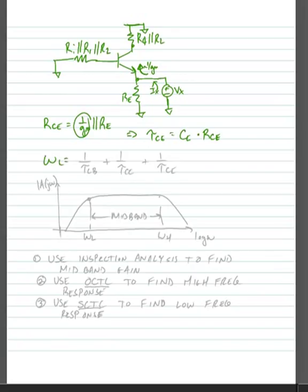And we can now find our low-frequency pole, omega L, is equal to 1 divided by tau CB plus 1 divided by tau CC plus 1 divided by tau CE. And of course that corresponds to the point in the magnitude of the amplitude response where the frequency response flattens out to start the mid-band gain.